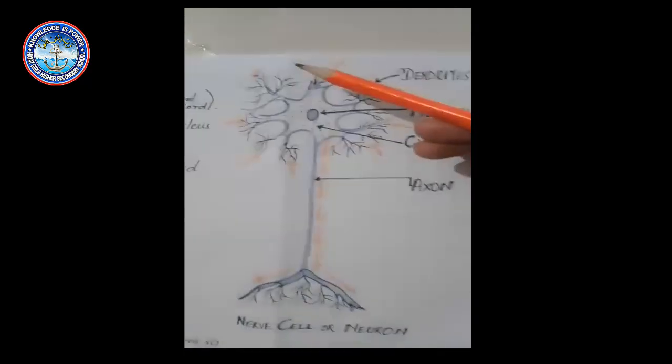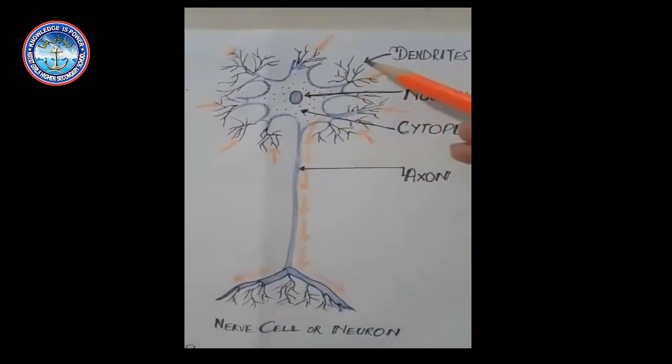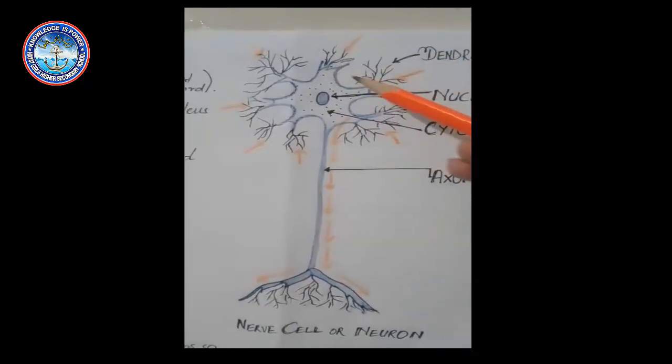First, the dendrites: the nerve impulses enter into the cell by these dendrites, or it receives the signals by these fine branches.